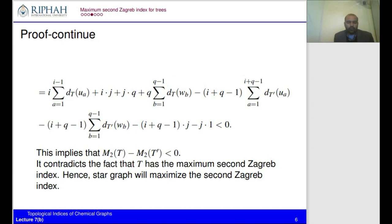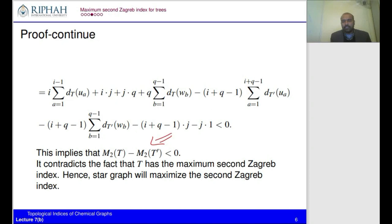After simplification, with i, q, and (i+q−1) as constants outside the summations, we obtain an expression for Z₂(T') − Z₂(T). Further simplification shows this whole expression is greater than zero, meaning Z₂(T) < Z₂(T'). But we assumed T has the maximum second Zagreb index — this is a contradiction. Therefore T cannot be a non-star tree, and only the star graph gives the maximum second Zagreb index.